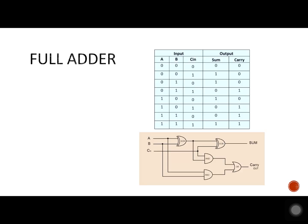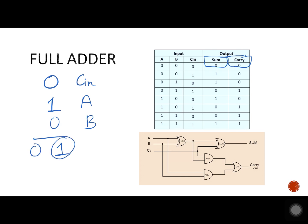What does full adder mean? A full adder basically performs addition over 3 binary bits and gives us sum and carry. One of the three inputs is the input carry. For example, with input carry as 0, A as 1, and B as 0, we get sum as 1 and carry as 0, as shown here.